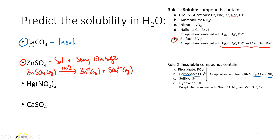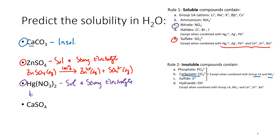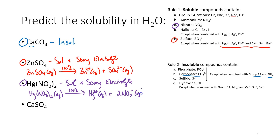How about the next one? Mercury 2 nitrate. Well, all nitrates are soluble — no exceptions. This is soluble and a strong electrolyte, meaning that in water, mercury 2 nitrate dissociates 100% into mercury 2 ions and, in this case, two nitrate anions.